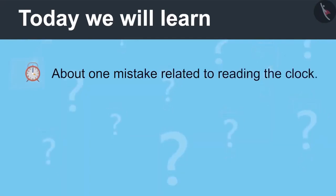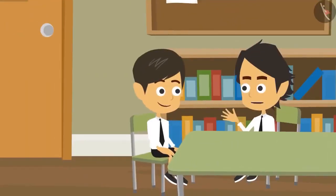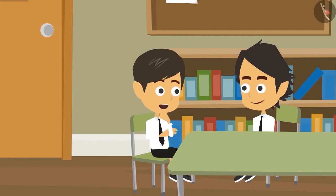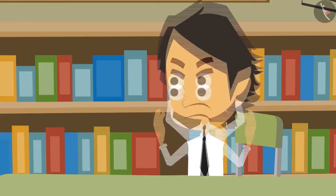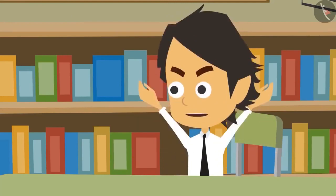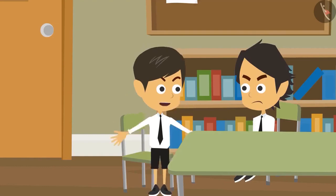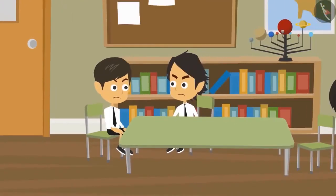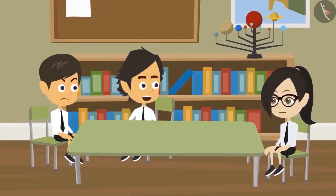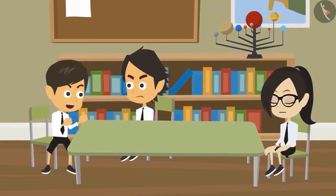Today we will learn about one mistake related to reading the clock. From home, I reach school in 2 minutes. I take 10 minutes and we both reach at the same time — then how does it take you only 2 minutes? Even you should take 10 minutes. No, it only takes me 2 minutes. I told you it takes 10 minutes for both of us. Oh, why are you two fighting? Reyanj does not even know how to read the correct time.